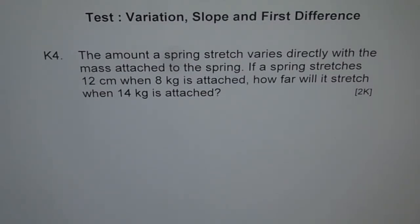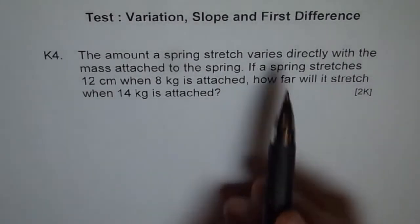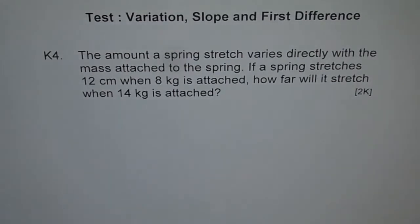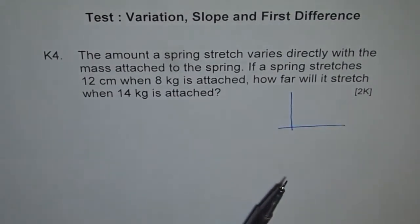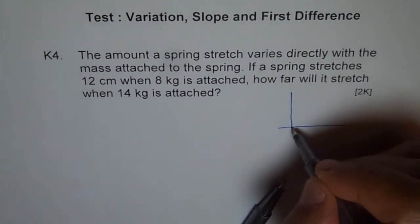So when we say 'directly varies,' I hope you remember what that means. Directly varies means if you draw a graph, then the variation is like this, right? It's a linear variation going through the origin. That is directly varies.